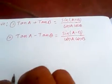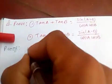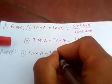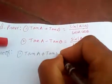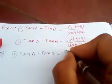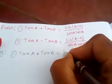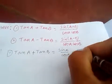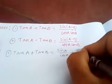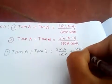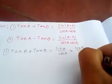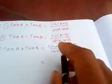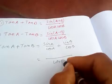So let's prove number one: tan(a) + tan(b). We know tan is sin/cos, so this becomes sin(a)/cos(a) + sin(b)/cos(b). If we simplify, the common denominator is cos(a)·cos(b).